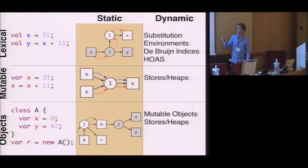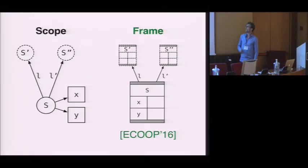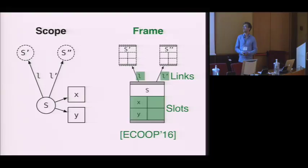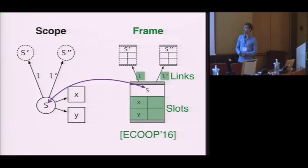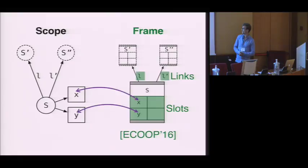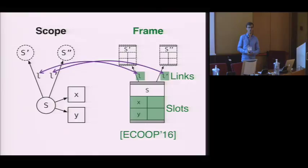Let's focus on memory. What we propose is to use frames for structuring runtime memory. A frame consists of a set of slots that bind names to values, and it records a set of links that link a frame to other frames. It also records which scope it instantiates — we say that a scope describes a frame when, for each declaration in the scope, there is a corresponding slot in the frame, and for each outgoing edge of the scope, there is a corresponding outgoing link of the frame.